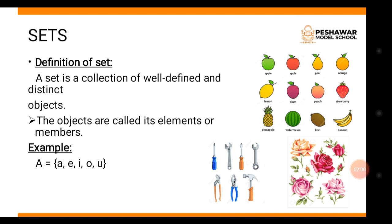Now starting the chapter — the name of the chapter is Sets. A set is a collection of well-defined and distinct objects. The objects must be well-defined, meaning there should be a proper definition for each, and distinct, meaning each member must have a unique position with no repetition.